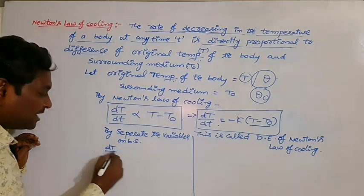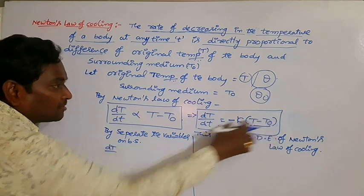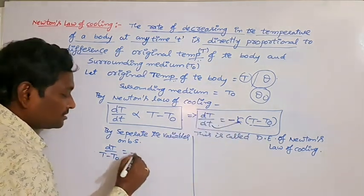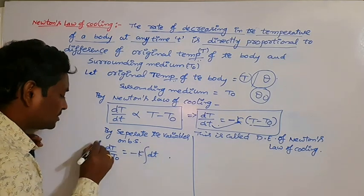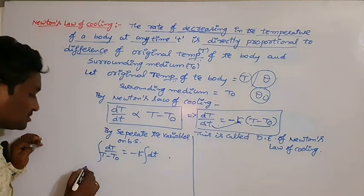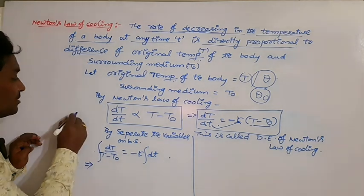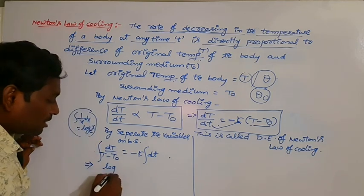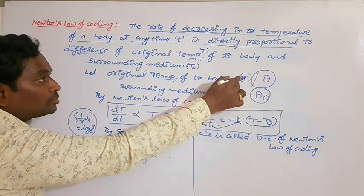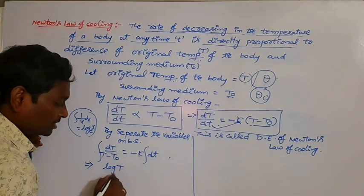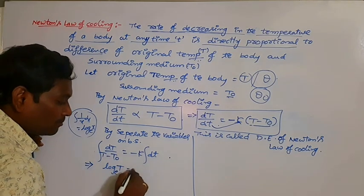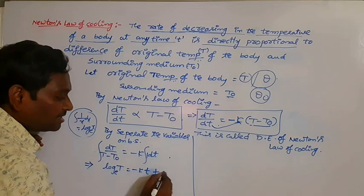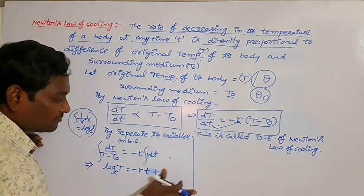By separating the variables on both sides, this equation becomes dT divided by (T minus T0) equals minus k dt. Now, integrating both sides, we use the formula: the integral of 1/x equals log x to the base e. So, log(T minus T0) to the base e equals minus kt plus log C.